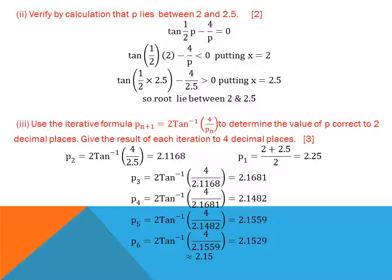Part three: use the iterative formula p_{n+1} = tan⁻¹(4/p_n) to find p correct to two decimal places, giving each iteration to four decimal places. Starting with p₁ = (2 + 2.5)/2 = 2.25, then p₂ = tan⁻¹(4/2.25) = 2.1168. Continuing: p₃, p₄, p₅, p₆... the root converges, repeating around 2.1559 and 2.1529, giving p = 2.15.